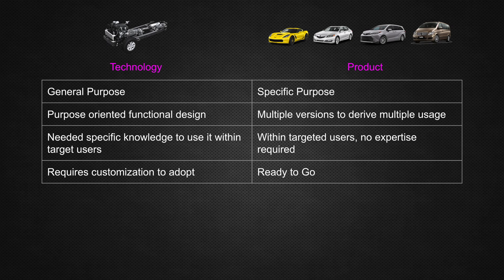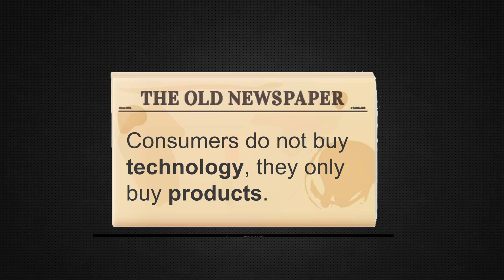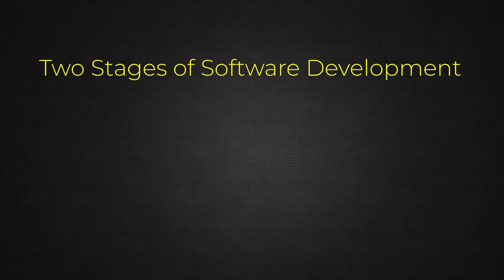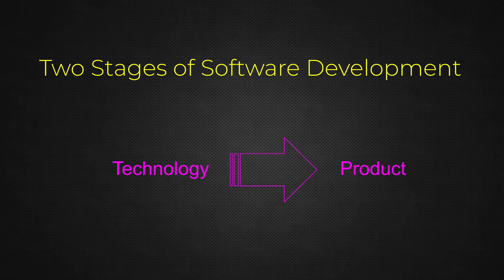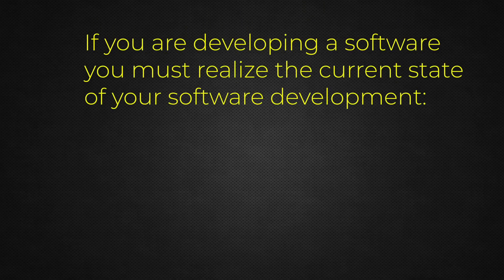Technology is designed to be used with lots of customization, whereas a product is ready to go — all the customizations have already been applied to convert the technology into the product. There is an old but very important saying: consumers do not buy technology, they only buy products. That rule applies to anyone and everyone who is building software technology products. We must understand the two stages of software development: you start with the technology, which finally transforms into the product.